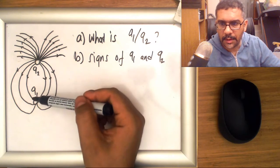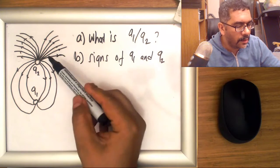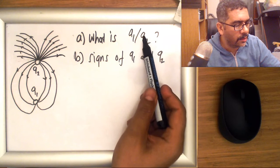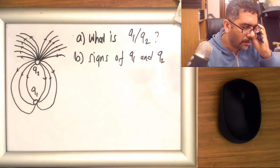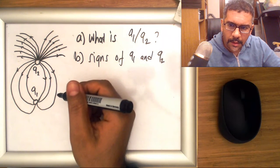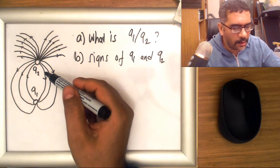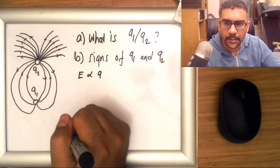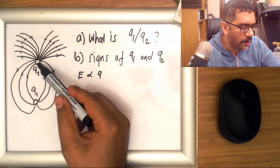Around these two charges, the first question is: with this configuration, what is the magnitude of charge q1 to q2? As I explained in the lecture, the density of electric field lines is proportional to the charge q. By using this fact, you can clearly see...